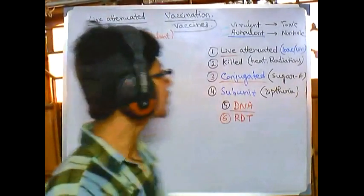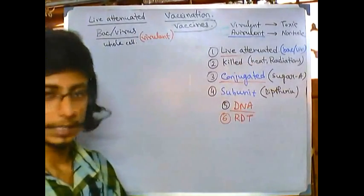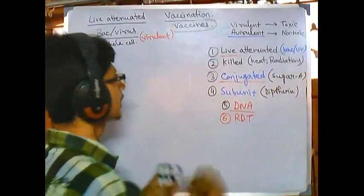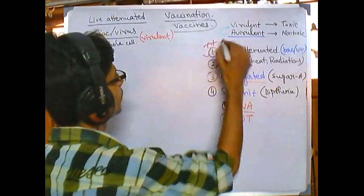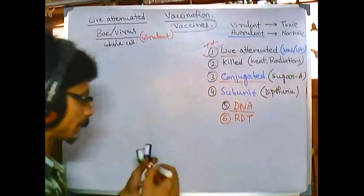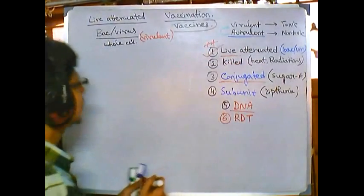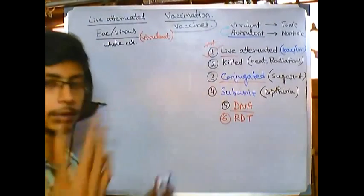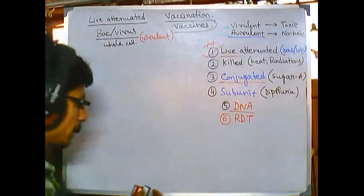Okay guys, we have already discussed the live attenuated vaccine. Now let us talk about the killed vaccine. As the name suggests, we'll take again the whole cell, which is a whole bacteria or viral suspension.